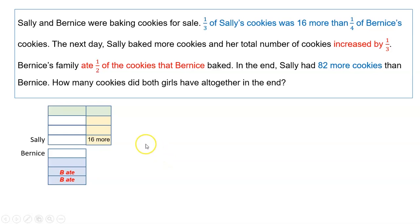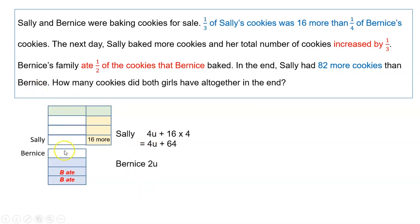Now what we need to do is write down what is left. Sally is left with four units — one, two, three, four — and four sets of 16, giving Sally four units plus 64. And Bernice is left with two units. The next sentence says Sally had 82 more cookies than Bernice. In other words, Sally had more, so we put the 82 together with Bernice's count so that you can make the equation equal to each other.